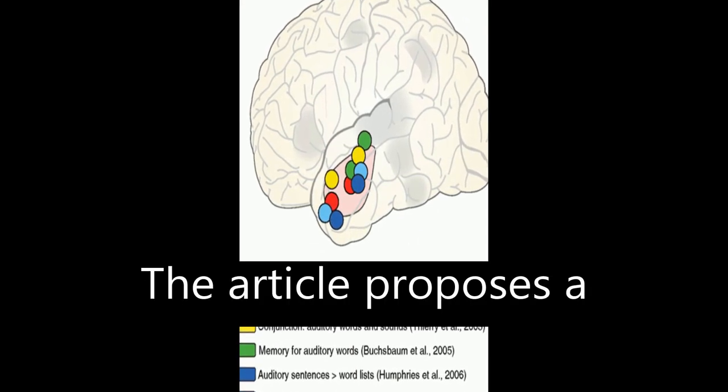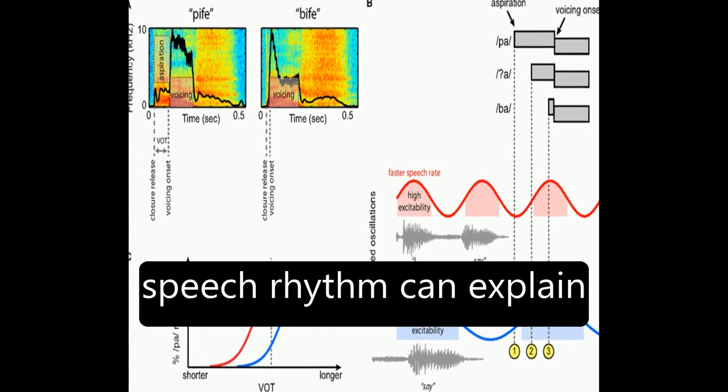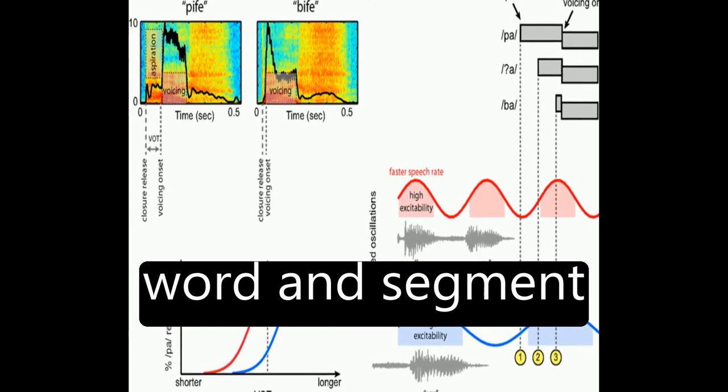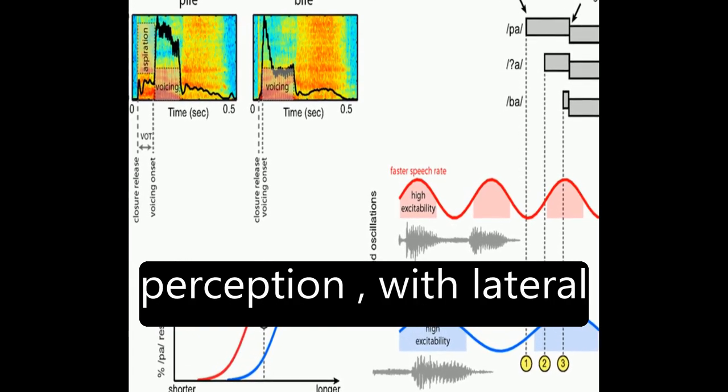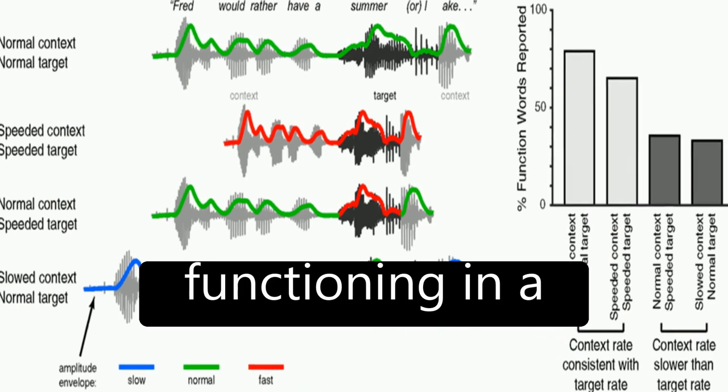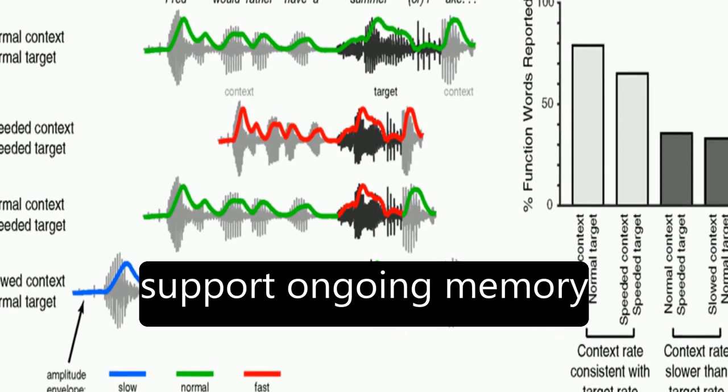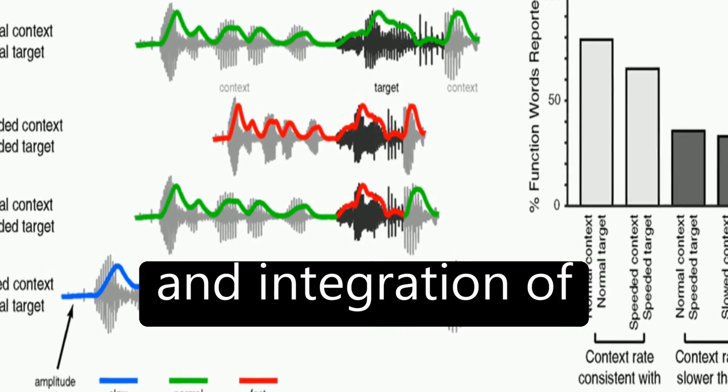The article proposes a framework through which neural entrainment to speech rhythm can explain effects of speech rate on word and segment perception, with lateral anterior temporal cortex functioning in a domain general fashion to support ongoing memory and integration of meaningful input.